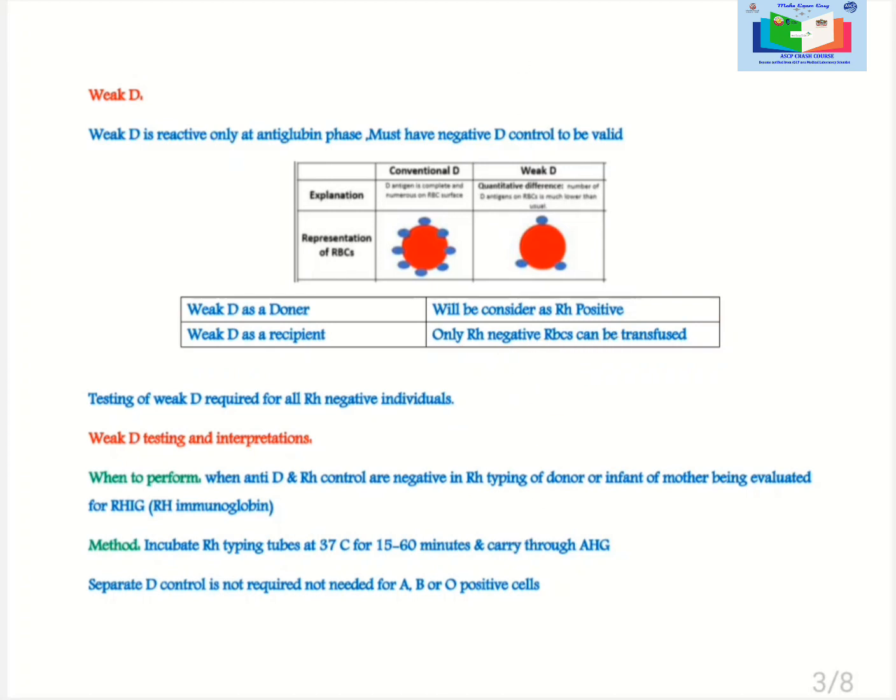Testing of weak D is required for all RH negative individuals for the prevention of alloimmunization against RH antigens. When to perform: When anti-D and RH control are negative in RH typing of donor or infant of mother being evaluated for RH immune globulin. Method: Incubate RH typing tubes at 37 celsius for 15-60 minutes and carry through anti-human globulin phase.